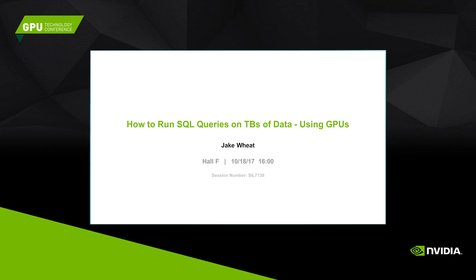Today we're going to look at the kind of queries which are typical for analytic columnar databases. There are a couple of reasons why these are interesting to run on the GPU. A lot of these sorts of queries are often I/O bound, but a lot of them are also CPU bound, running on clusters with a lot of expensive CPUs. Another good reason is that a lot of SQL queries fit very well with what the GPU is good at.